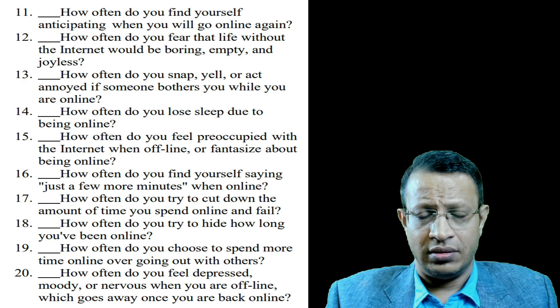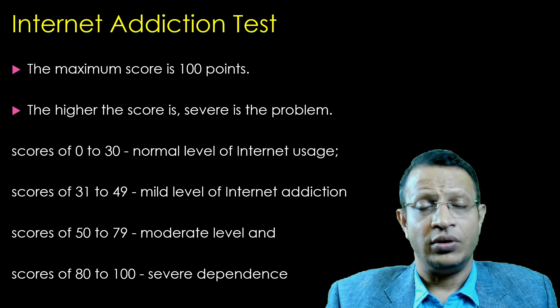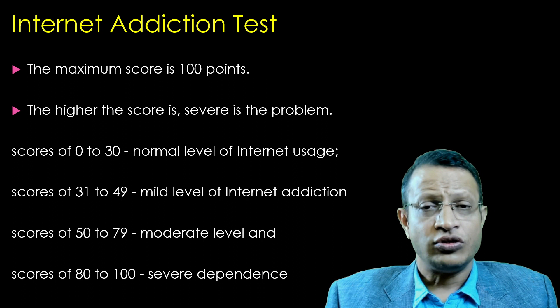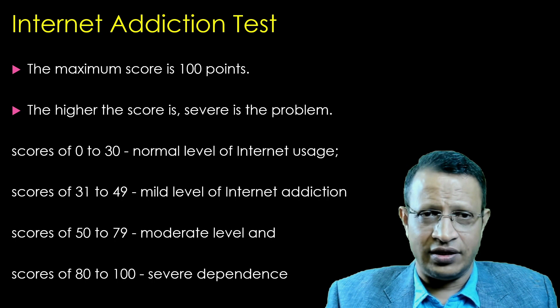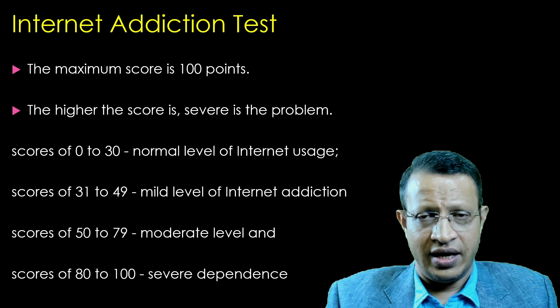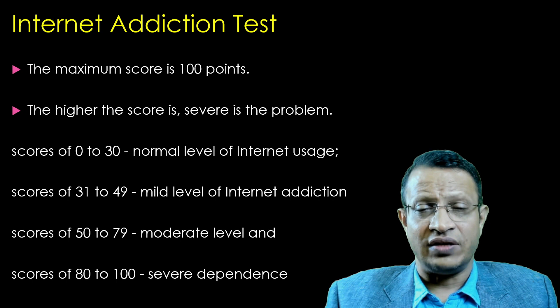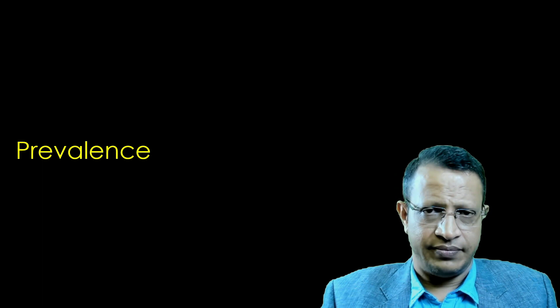The individual needs to rate between 0 to 5 for each of the 20 items, giving a maximum score of 100. The higher the score, the more severe the problem. A score of 0 to 30 may be considered normal; 31 to 49 is mild internet addiction; 50 to 79 is moderate level of internet addiction; and 80 to 100 is severe internet addiction.